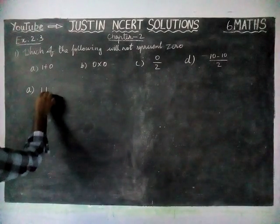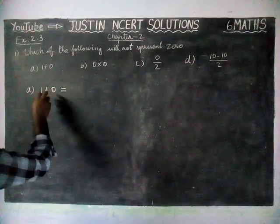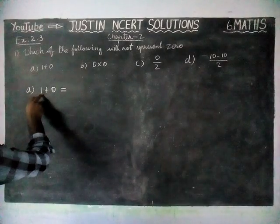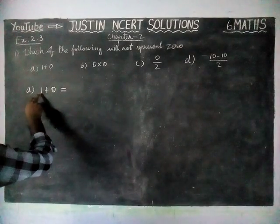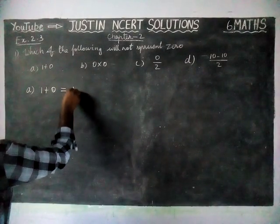Option A: 1 plus 0 is equal to — when we are adding 0 with any number, we will get the same number, which is 1.